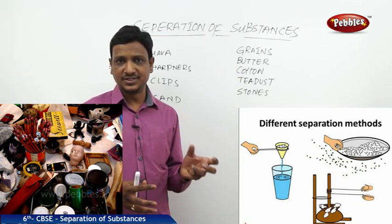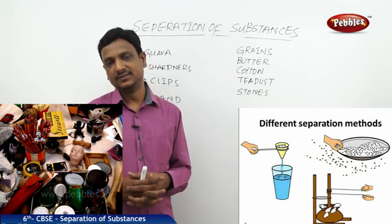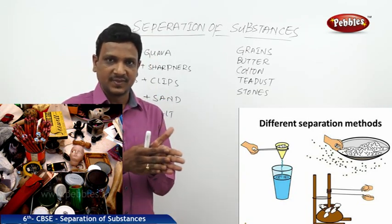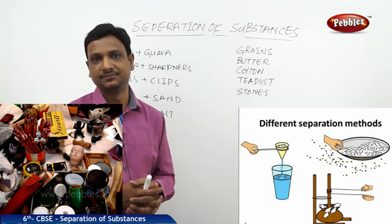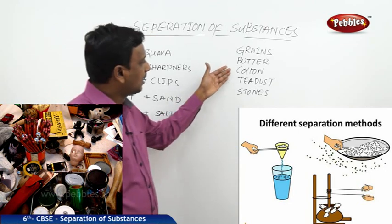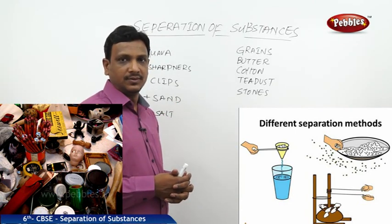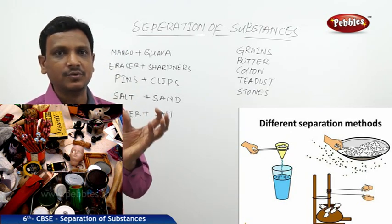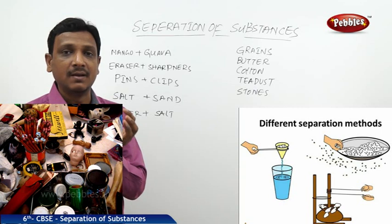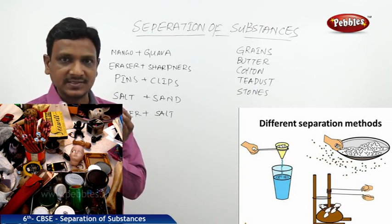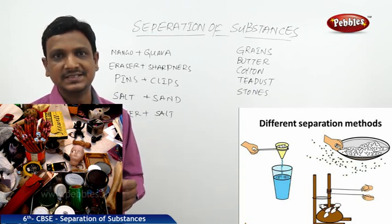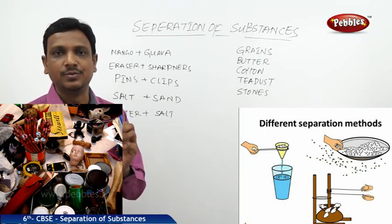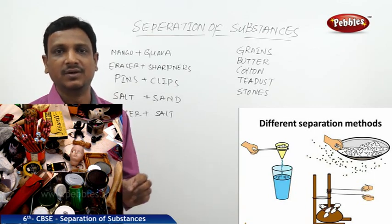Butter has to be separated from milk by churning — the fat is separated from the milk by churning. Cotton is found in the cotton fruit in the form of cotton wool, but the cotton wool is embedded with so many seeds. The seeds are to be separated by a process called ginning. So there we need only cotton, not the seeds — the seeds are separated by the method called ginning.